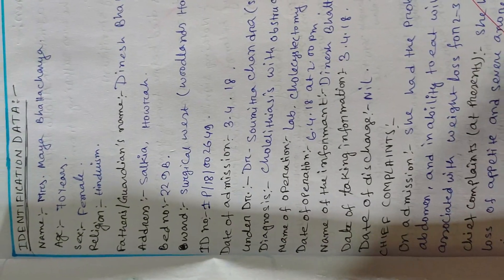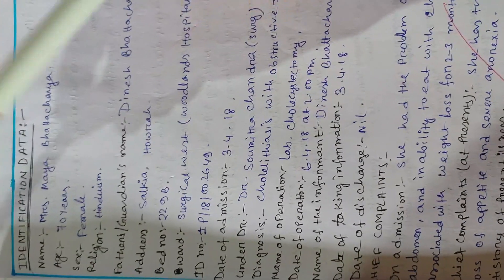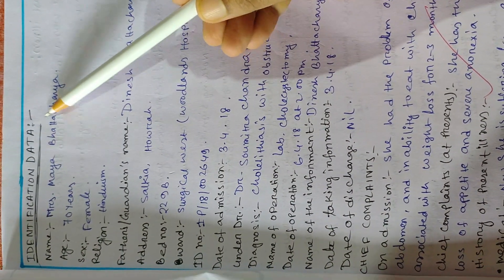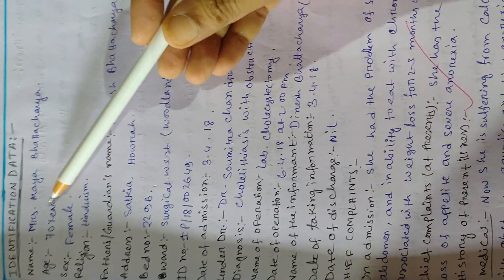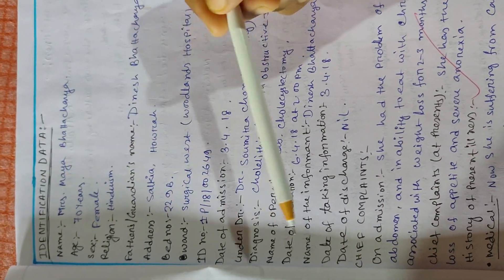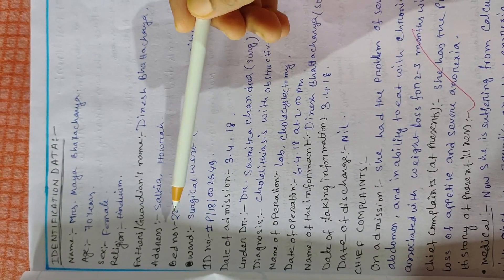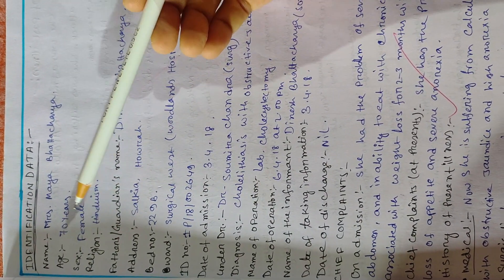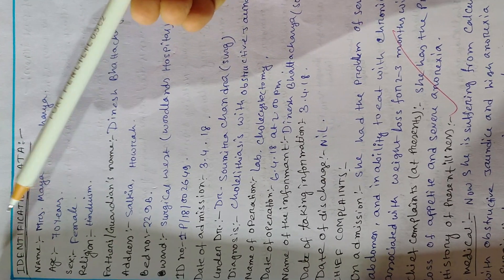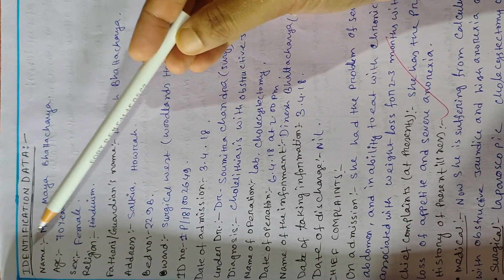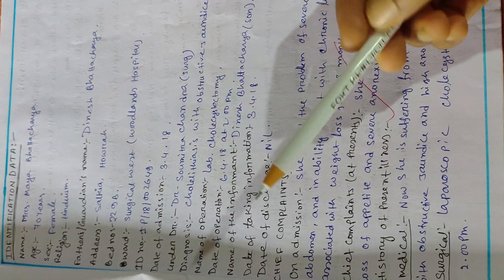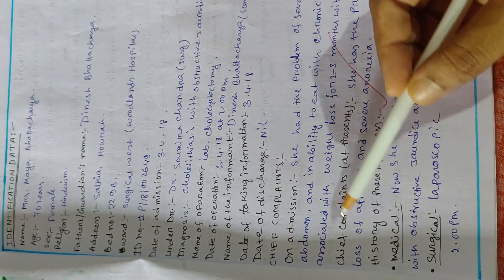The first point in the Cholelithiasis care plan is identification data. Identification data includes: name, age, sex, religion, guardian name, ID, ward name, bed number, doctor, and diagnosis. All these points should be covered under identification data.